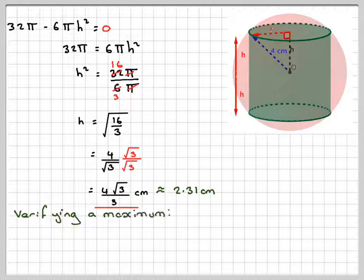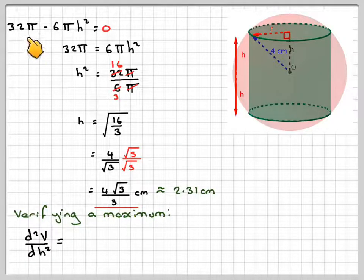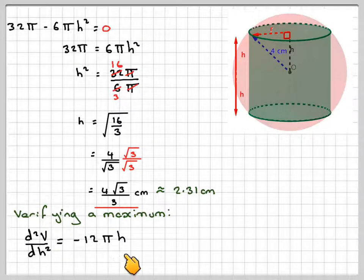So verifying it's a maximum. Now to verify a maximum is that you take the first derivative, which is all of that, and differentiate it again. So differentiate 32π, you get nothing. Differentiate this, you're going to get 2 times minus 6, which is minus 12π h.